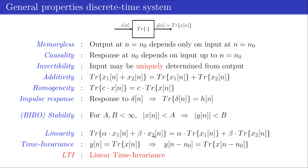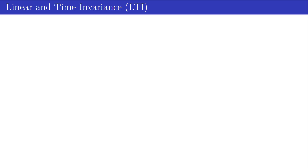A system that is both linear and time invariant is referred to as a linear time invariant system, abbreviated as LTI. For an LTI system, stability is guaranteed if the impulse response is absolutely summable. The advantage of an LTI system is the elegance and relative simplicity of the underlying theory. Stability and causality are easily checked, and the input-output relation is conveniently described by convolution in the time domain. Both linearity and time invariance of an LTI system are important to understand how to simplify the mathematical analysis to obtain greater insight and understanding of system behavior.